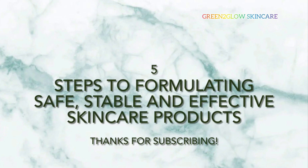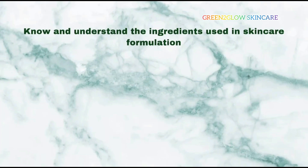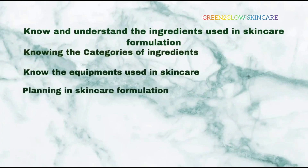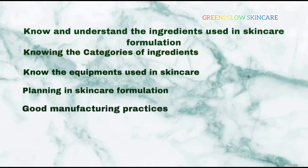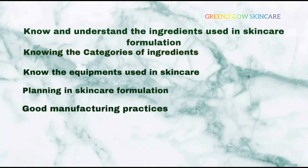First, let's go through the steps, then I'll explain them one after the other. Number one: know and understand the ingredients used in skincare formulation. Two: know the categories of ingredients. Three: know the equipment used in skincare. Four: planning in skincare formulation. Five: good manufacturing practices.